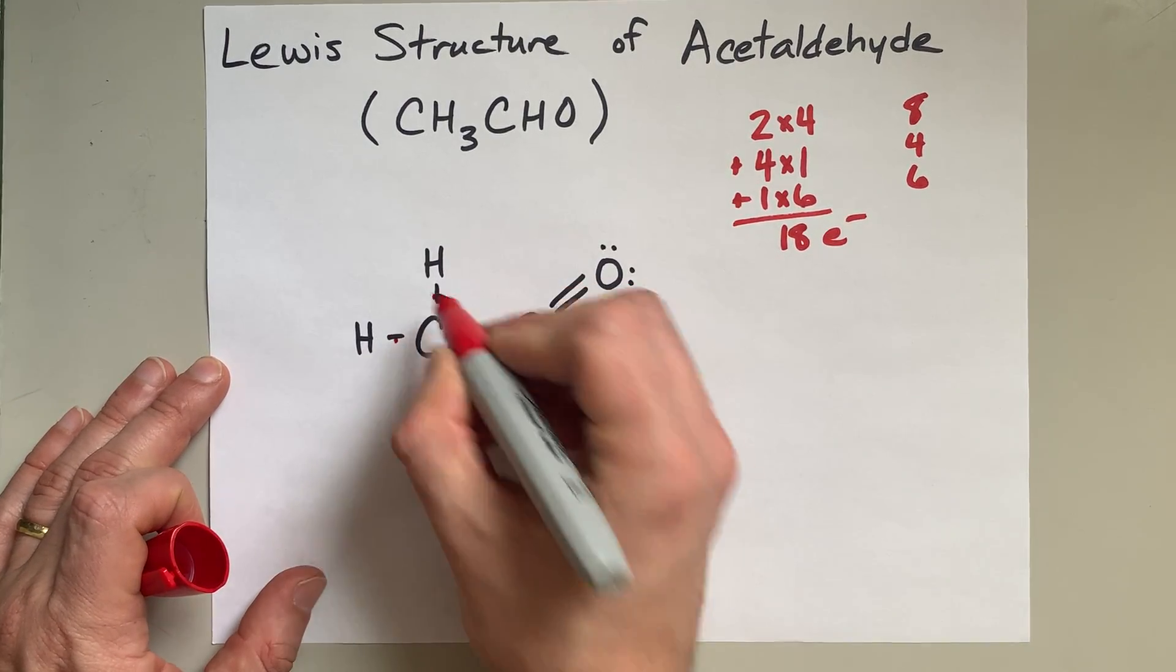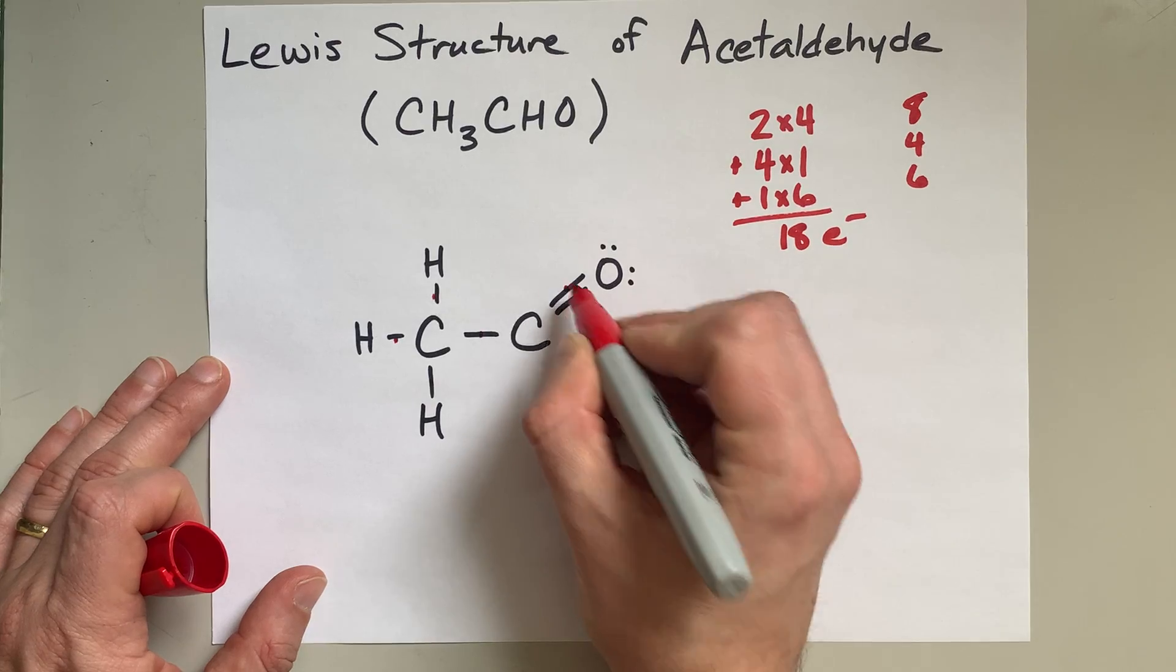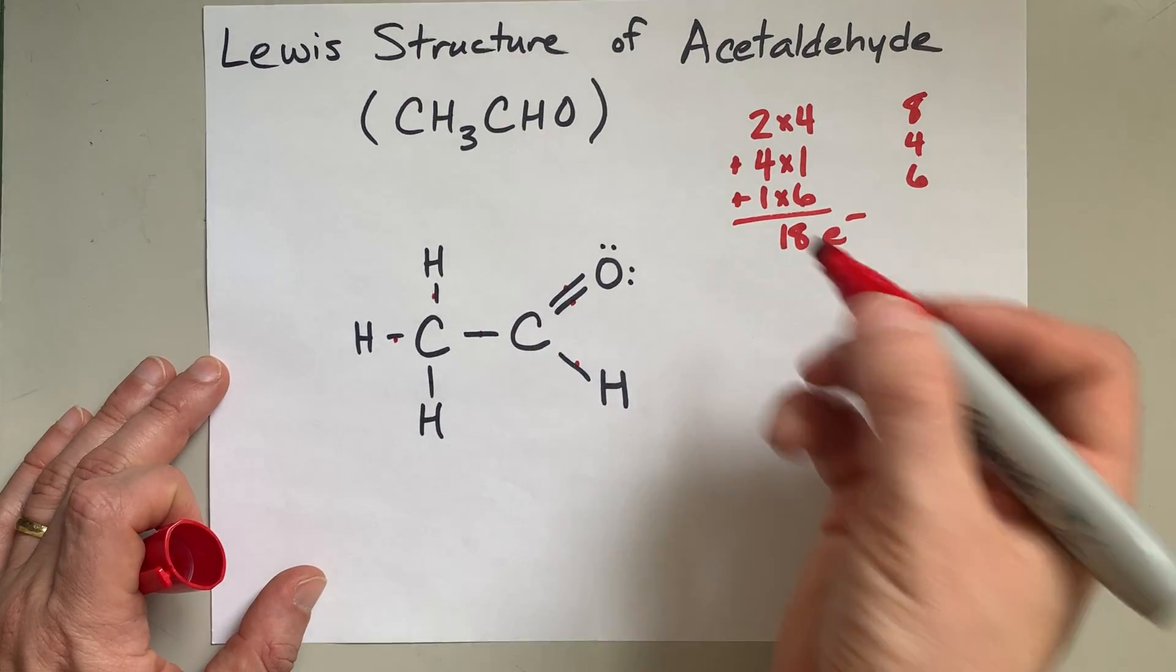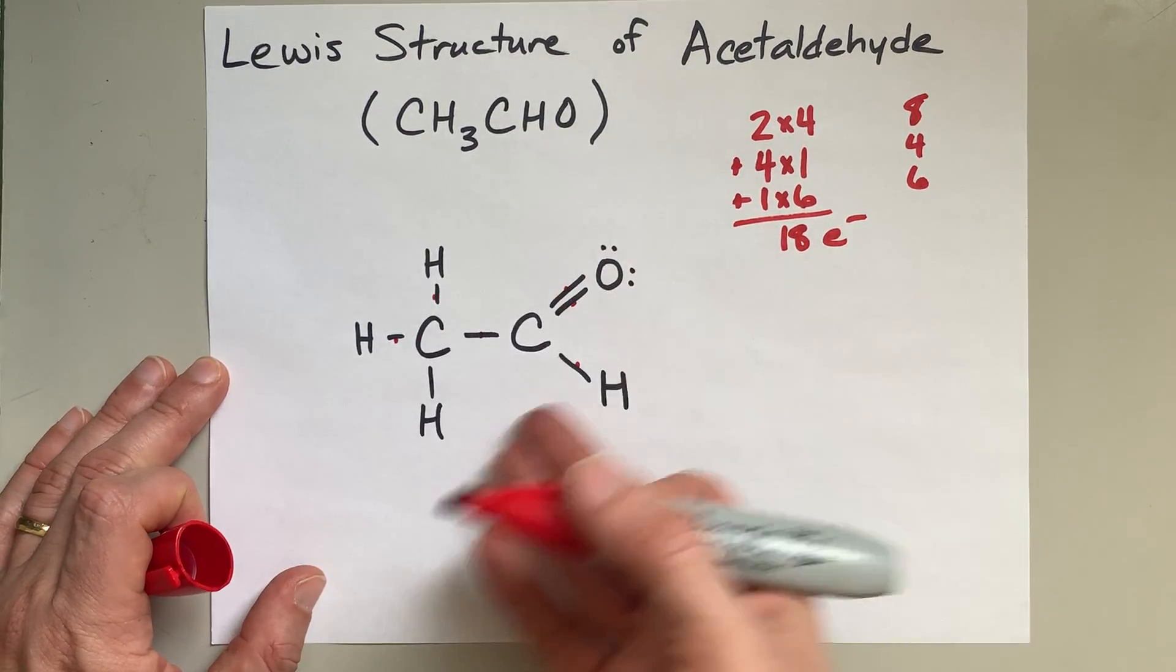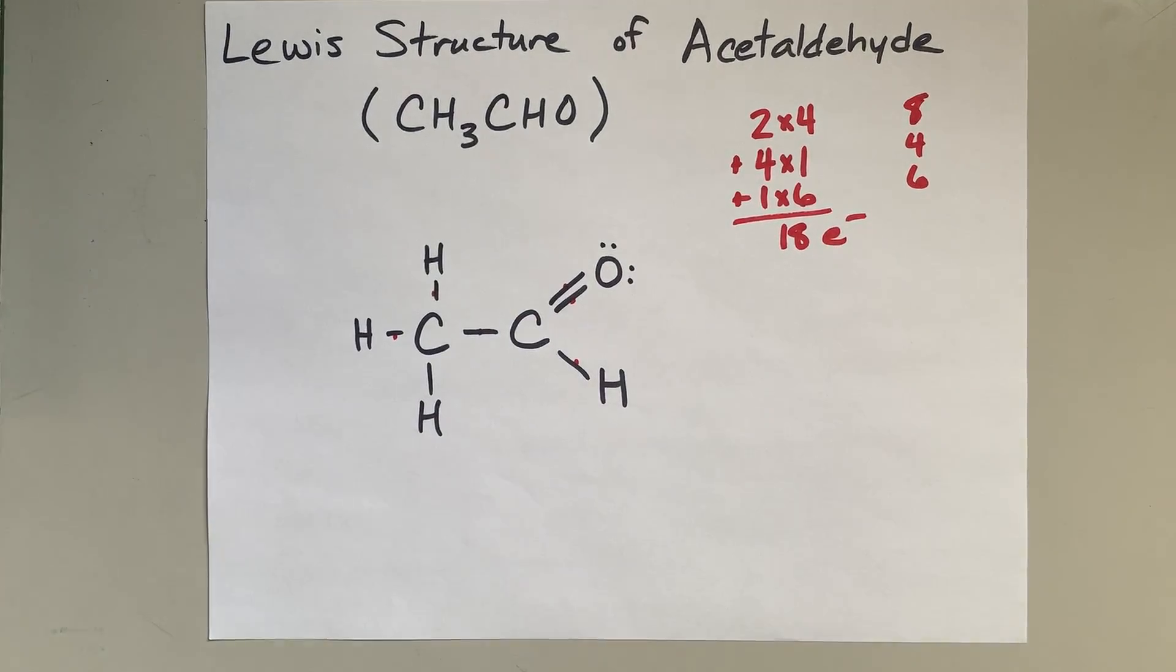And now we'll count the electrons that are in this structure. Two, four, six, eight, ten, twelve, fourteen, and then sixteen, eighteen. So I have accounted for all the electrons here.